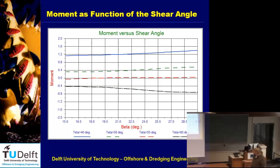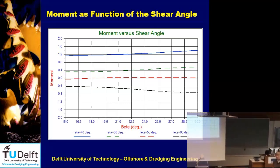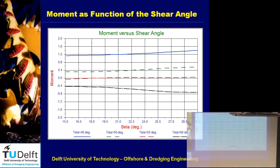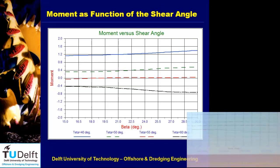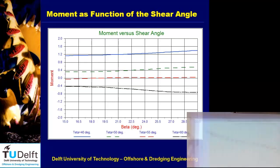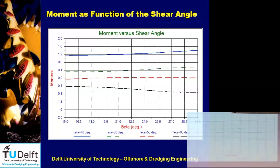I did the calculation for a number of theta values — 40, 50, 55, and 60 degrees for the tip angle of the wedge — and on the horizontal axis is the shear angle. The red line for 55 degrees starts a little below zero and ends a little above, but roughly that line is almost at zero. So the assumption that this angle should be 55 degrees is correct.